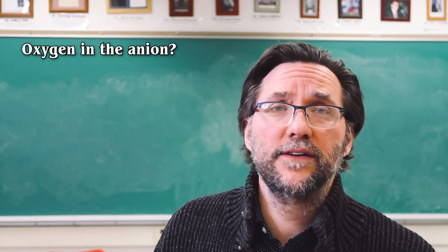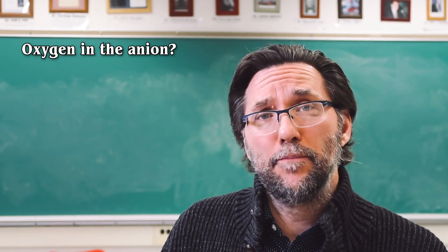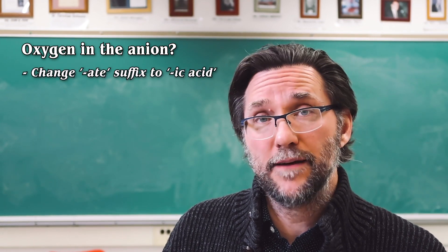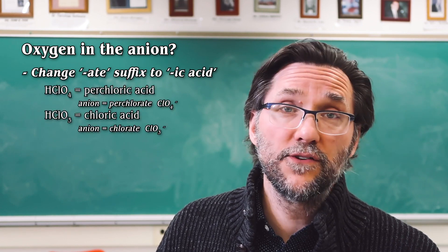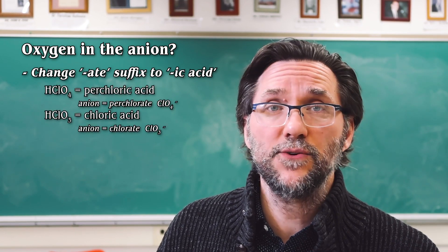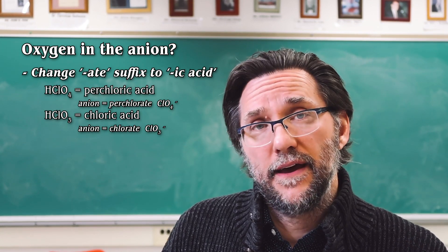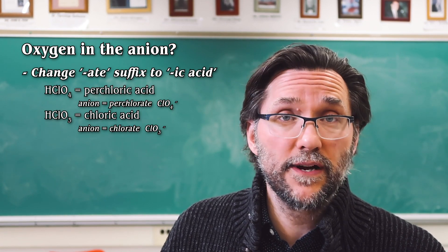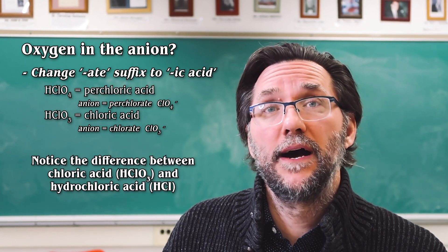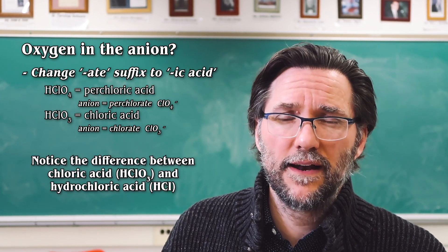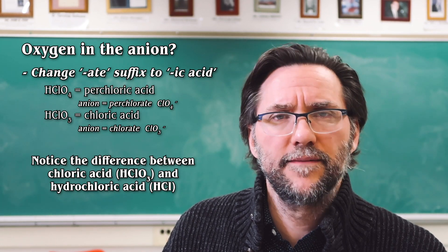Once you can name your oxygen-containing polyatomic, turning it into an acid is a piece of cake. If your polyatomic ends in '-ate', for example chlorate or even perchlorate, all you do is take away the '-ate' suffix and change it to '-ic acid'. So chlorate becomes chloric acid and perchlorate becomes perchloric acid. It's very easy. Now differentiate chloric acid from hydrochloric acid — they sound a lot alike, but they're very different. Remember, 'hydro' means it doesn't contain oxygen.